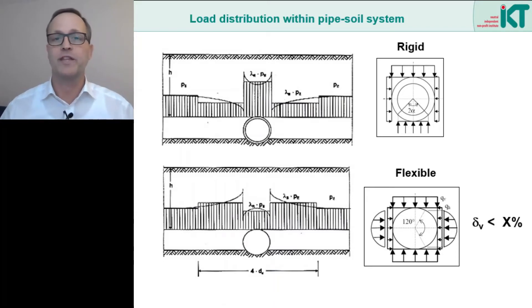Typical examples for these pipes are concrete and clay pipes. And then the second case, these are flexible pipes. Here, the soil next to the pipe absorbs more load than the pipe itself. In addition, the pipe deforms horizontally into the lateral bedding. This activates further lateral bedding reaction forces that are far greater than the normal horizontal earth pressure.